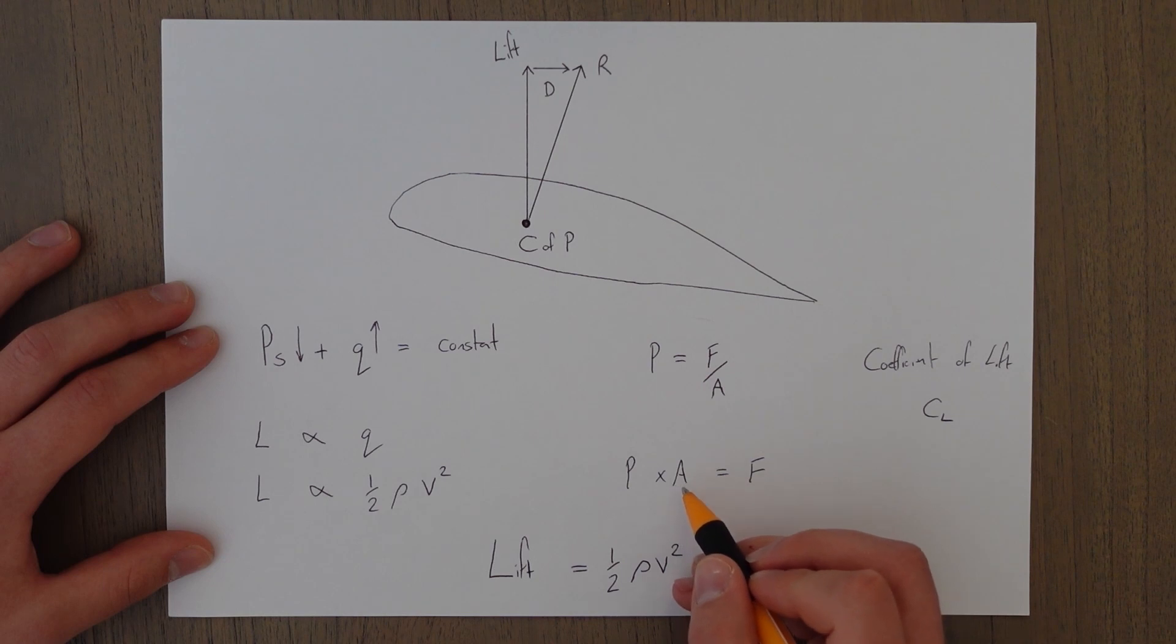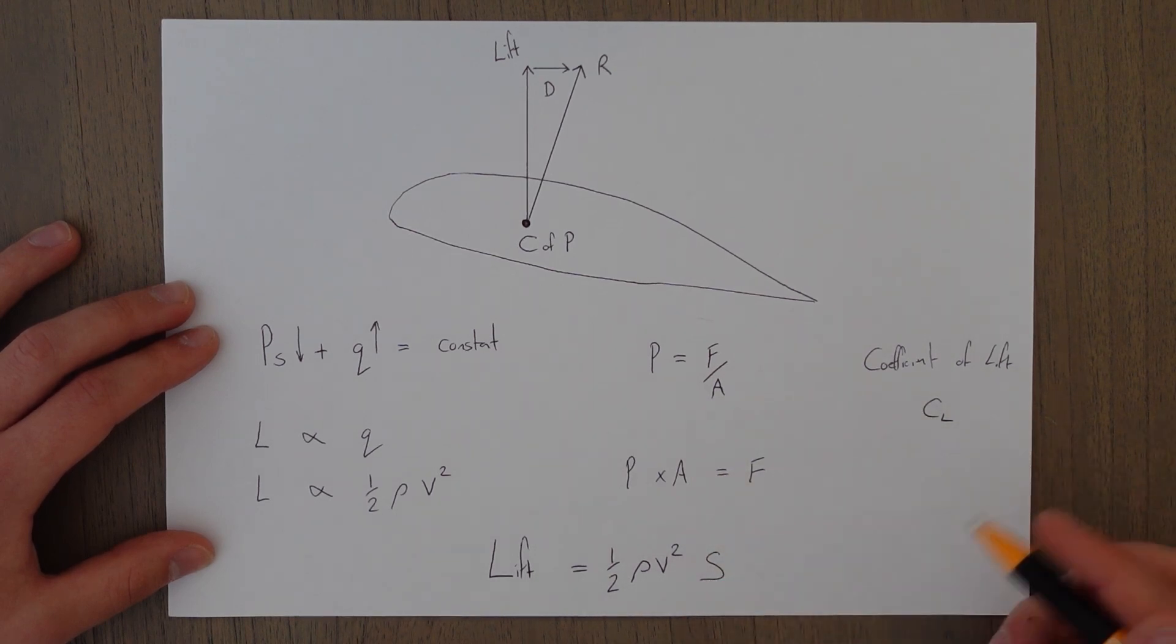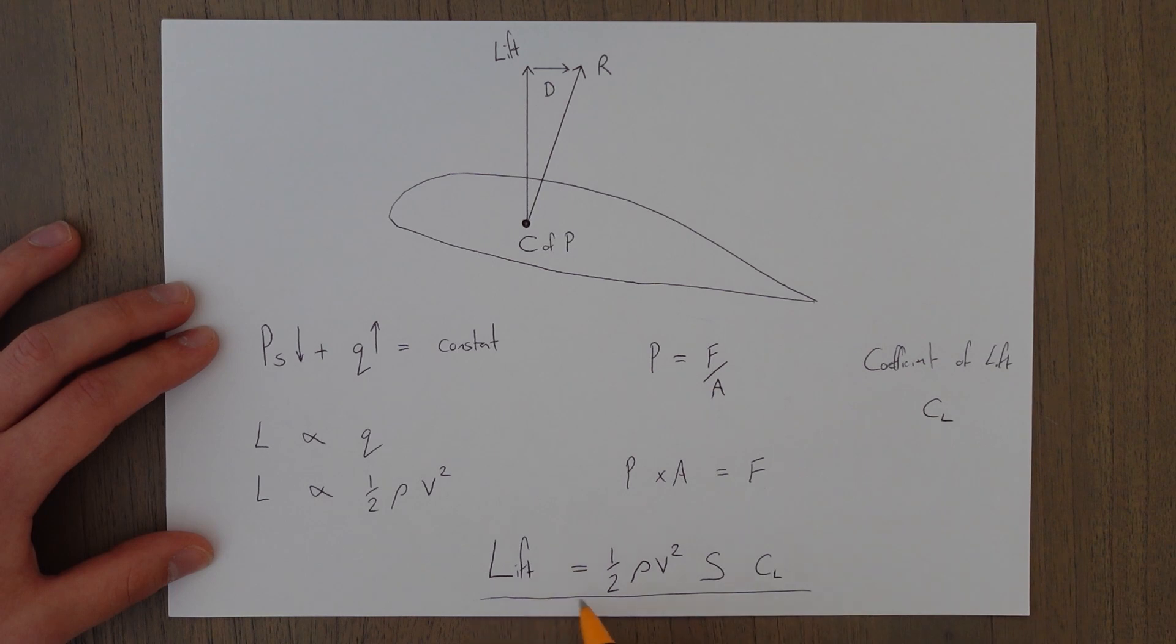the area, because we know we have to multiply by the area to get this force. We use S for surface area, and then we also multiply by this coefficient of lift to get our lift formula: lift equals a half rho v squared S CL.